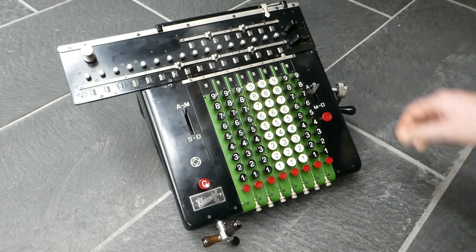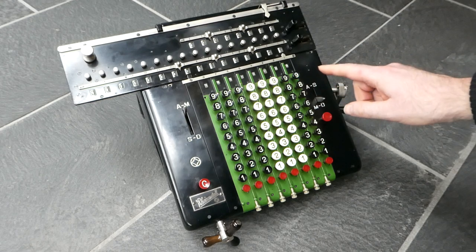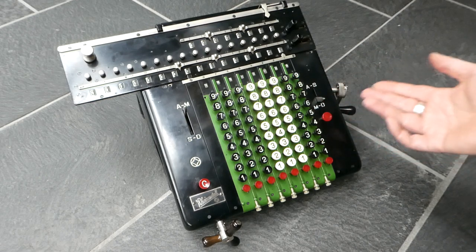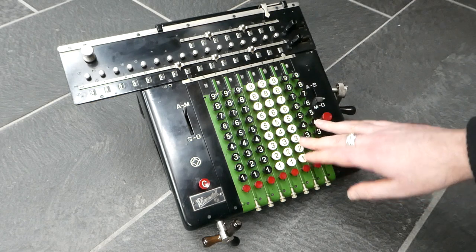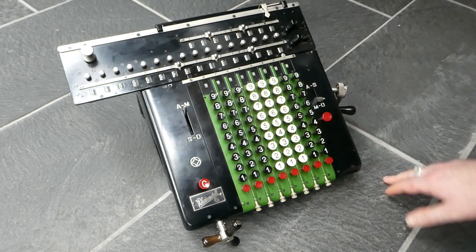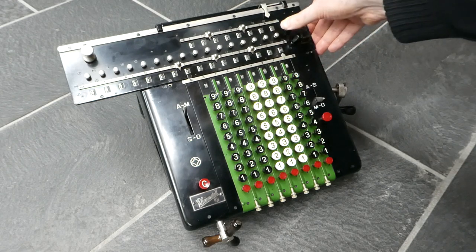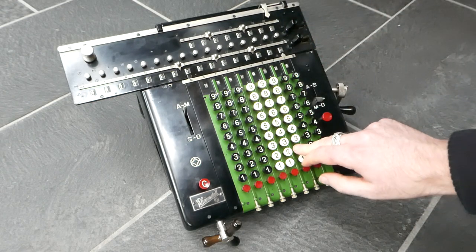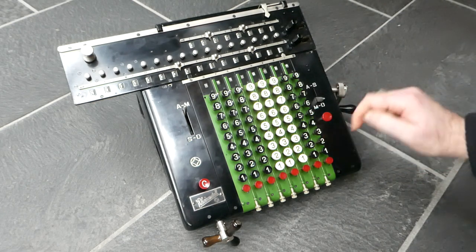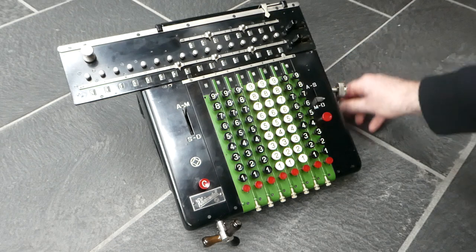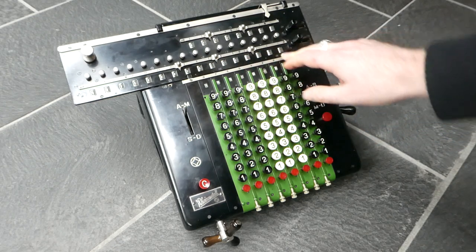Obviously any carries are performed automatically. For multiplication you switch this lever downwards, and basically all that does is it ensures that the keyboard is not cleared after you've turned the crank. So if I enter a number now it's not cleared, so I can turn it a few times. I've turned it four times, so this is four times this input.